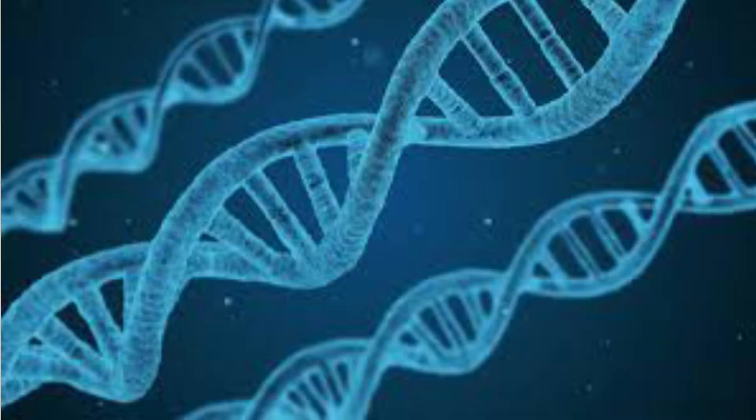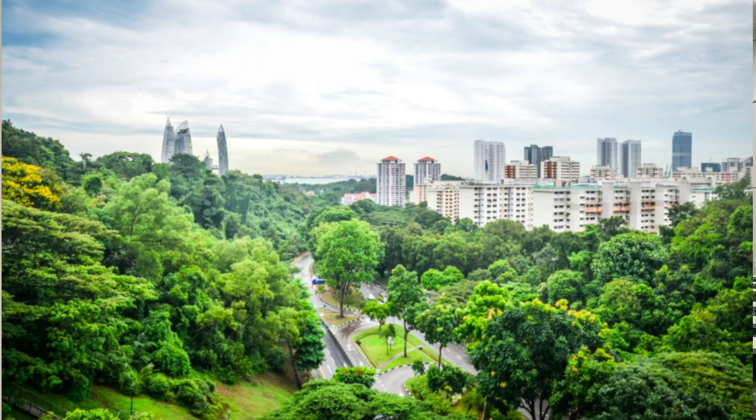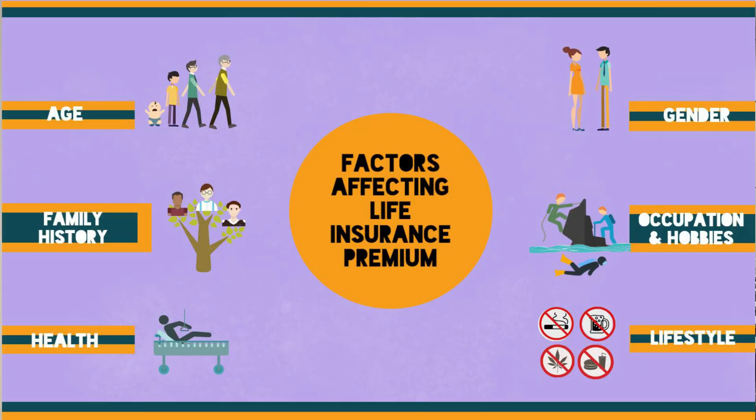The insurance company will take into account the insured person's entire genetic background, any diseases in the family, whether they are living in a polluted city or a relatively healthy environment, and whether they are in an occupation where their life might be in jeopardy. All these factors affect the risk of dying, which increases the premium. This premium calculation — based on genetics, disease, city, occupation, and more — requires a lot of statistics and understanding of risk, and that is what actuaries do.